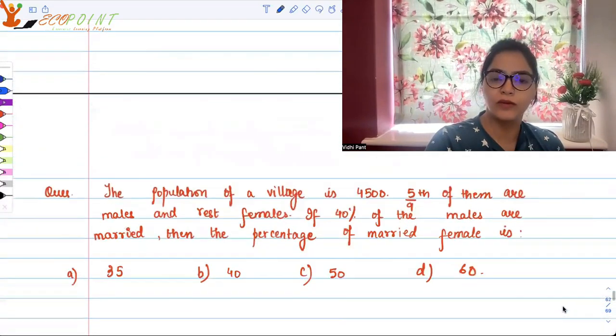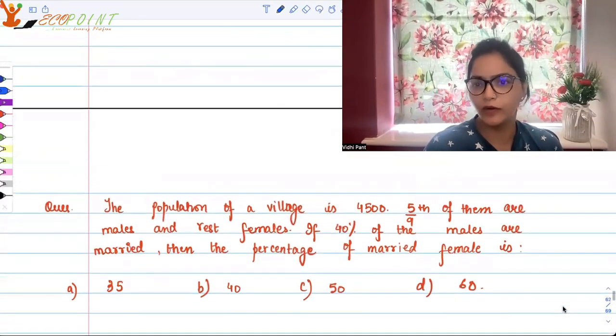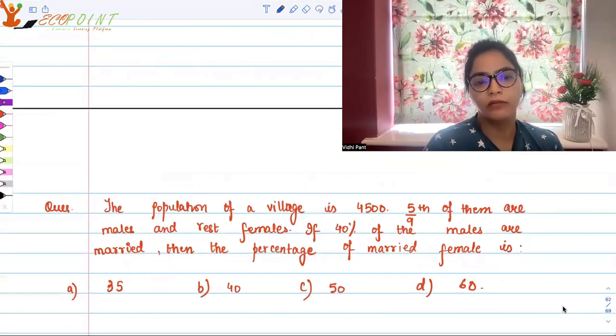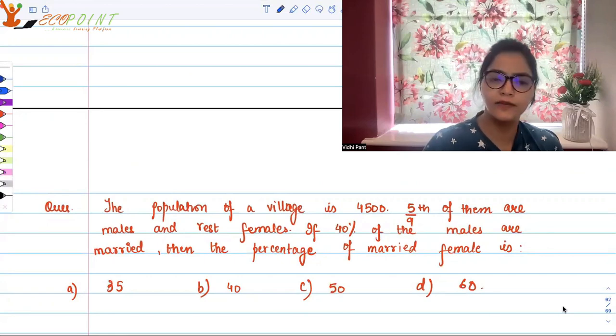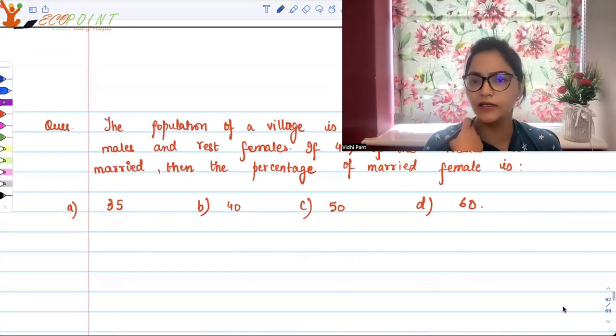That was one question. Let's take another question from percentages for quick revision. The population of a village is 4500. Five-ninths of them are males and rest are females. If 40 percent of the males are married, then what is the percentage of married females?